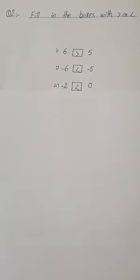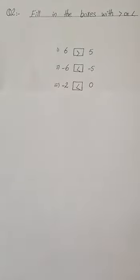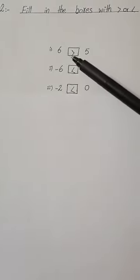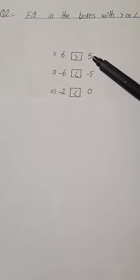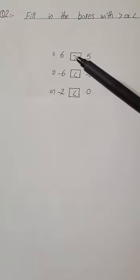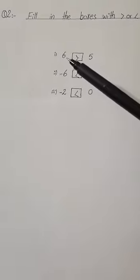Now move on to question number 2. We just fill in the boxes with greater than and less than signs. This sign has two directions: an open face and a closed face. We use the open face for the greater number and the closed face for the smaller number. We have 6 and 5 — both are positive numbers — so it's very easy to decide which is greater. 6 is greater, so we put the open face at the side of 6.